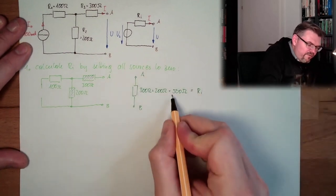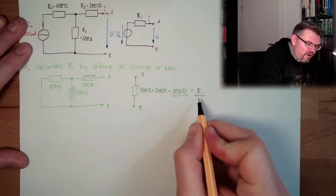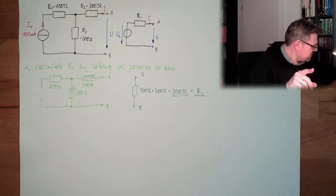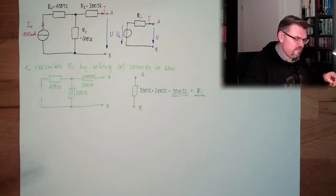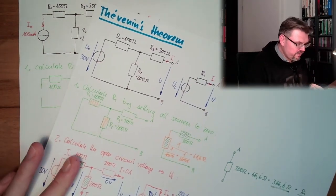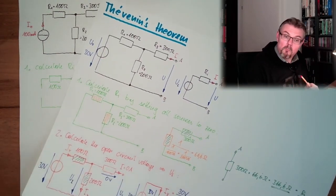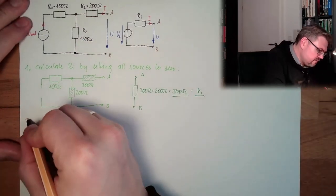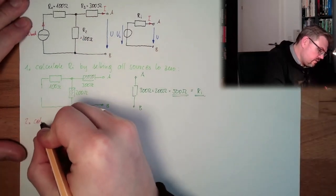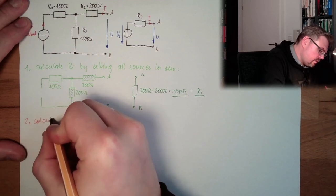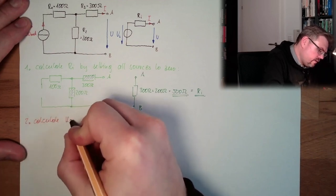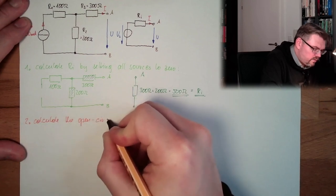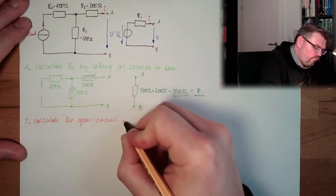Ri = 500 ohms — that's one value fixed. Second step: calculate the open circuit voltage.